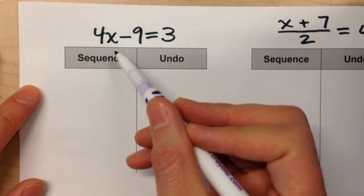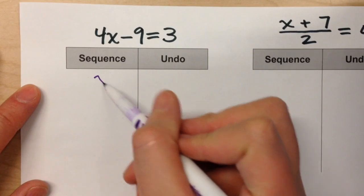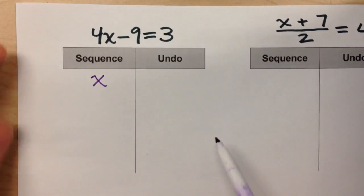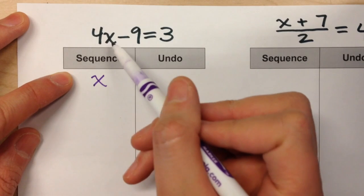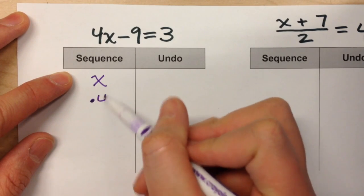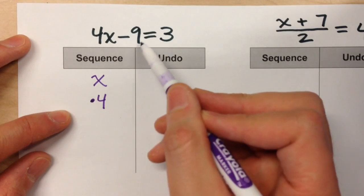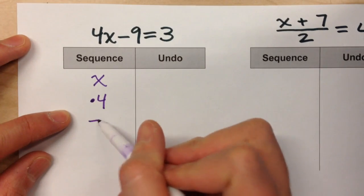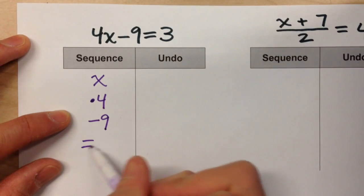For example, in this equation, 4x minus 9 equals 3, we start with x, because that's our unknown. And then, if you notice, the first thing that happened to x was it was multiplied by 4. So I'm going to write it times 4. After that, we subtracted 9 from it, minus 9, and it equaled 3.